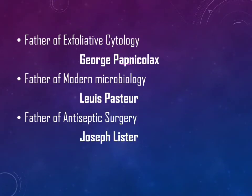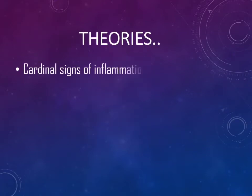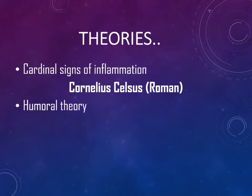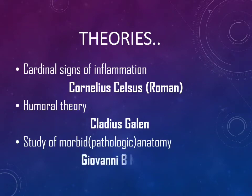Let's see the important theories in pathology. Cardinal signs of inflammation were introduced by Cornelius Celsus, who was a Roman. Humoral theory was by Claudius Galen. Study of morbid pathologic anatomy was done by Giovanni B. Morgagni.